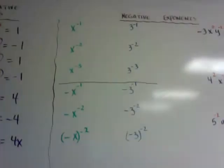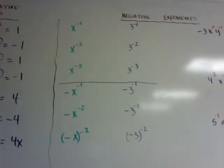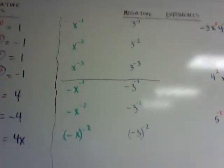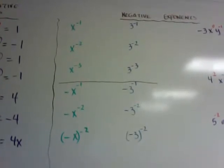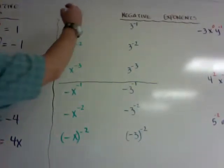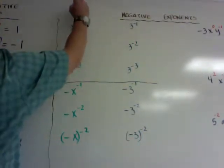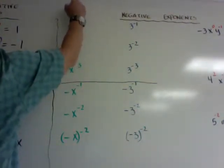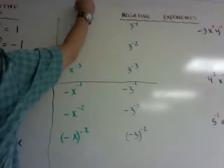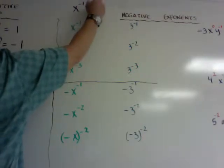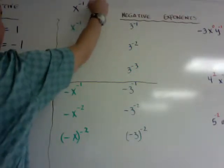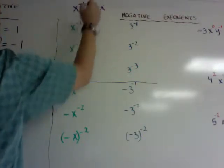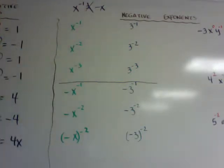Now we're going to negative exponents. I have a few examples here and then I'll show you how to simplify. x to the negative 1 — the most common mistake people make — x to the negative 1 is NOT equal to negative x. That's wrong.